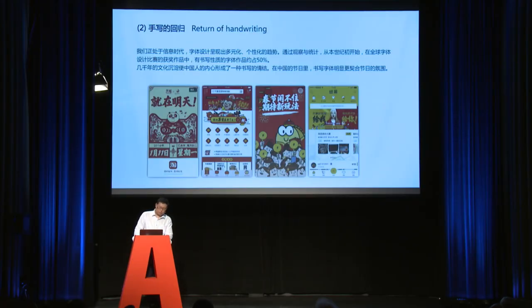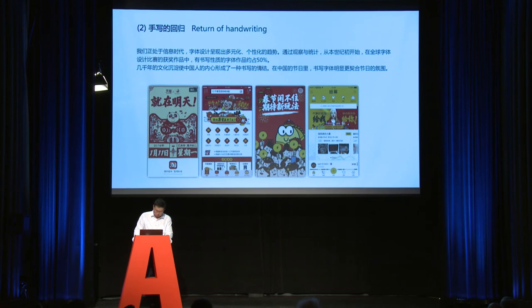Using Latin-based methods to design Chinese could improve the layout of Kai Shu — we can see the width of the character in Chinese as a variable. The second trend is the return of handwriting. Since the beginning of this century, about 50% of winning places in international type design competitions have been inspired by or related to handwriting or calligraphy.